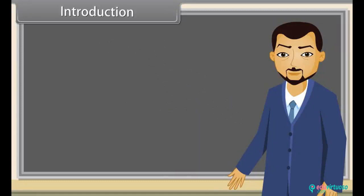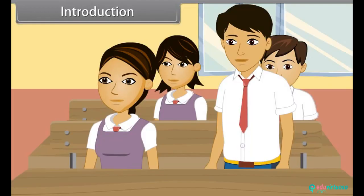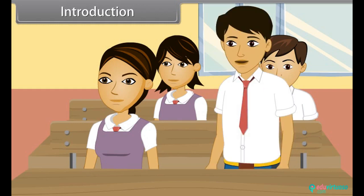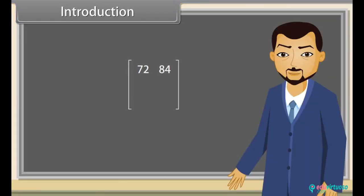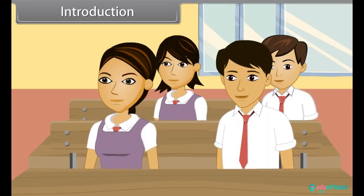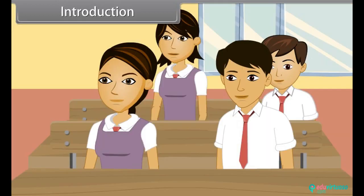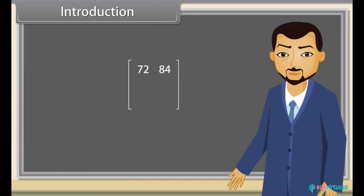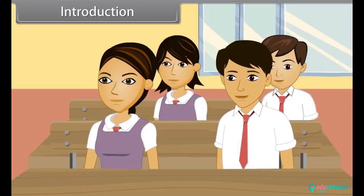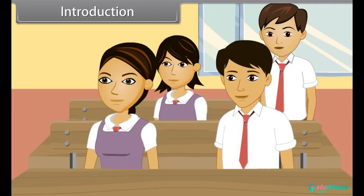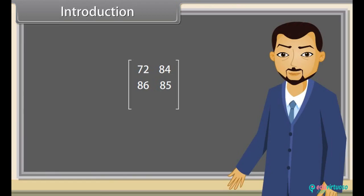Introduction. Arun, how much did you score in science last year? 72. And in maths? 84. Shraddha, how much did you score in science and maths? I scored 86 in science and 85 in maths. Prateek, you tell me now. 67 in science and 72 in maths.